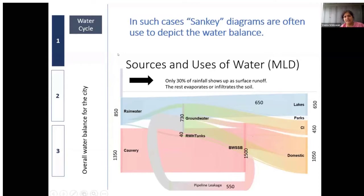Only a fraction of that rainwater actually runs off and shows up in lakes and streams that we can account for. The Kaveri water — a big chunk — ends up going through various uses in the city before eventually leaving as treated or untreated wastewater downstream.